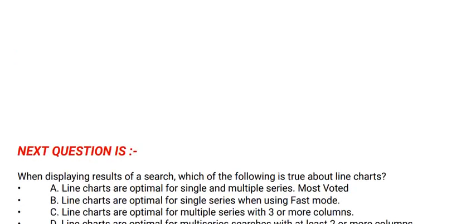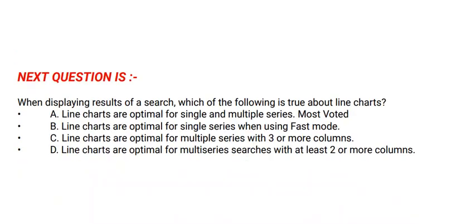The correct option is Option D. Next question is: when displaying results of a search, which of the following is true about line charts? Options are: Option A: Line charts are optimal for single and multiple series, most voted. Option B: Line charts are optimal for single series when using fast mode. Option C: Line charts are optimal for single series searches with at least two or more columns.